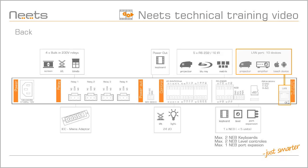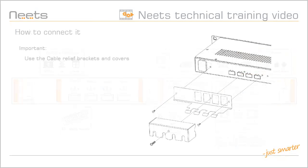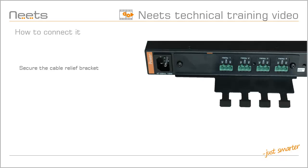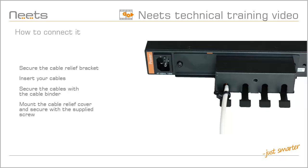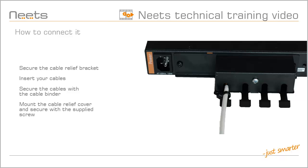With Alpha 2 you can control up to 10 network devices. When connecting cables to the relays, it is important to use the cable relief brackets and covers supplied with the Alpha 2. First, secure the cable relief bracket with the supplied screws to the Alpha 2. Then insert your cable and secure it with the cable binder. Finally, mount the cable relief cover over the cable relief bracket and secure with the supplied screw.